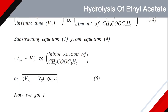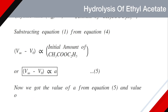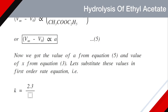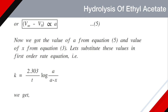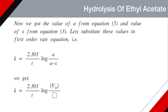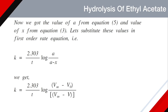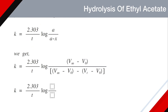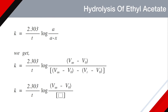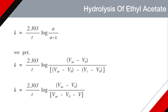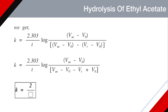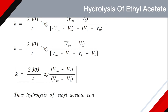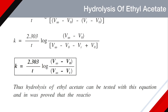We got the value of A from equation five and value of x from equation three. Substituting these values in the first order rate equation, k = 2.303/t × log(A/(A−x)), we get k = 2.303/t × log((V∞ − V0)/((V∞ − V0) − (Vt − V0))). Opening the bracket, k = 2.303/t × log((V∞ − V0)/(V∞ − Vt)), since V0 cancels. Thus, hydrolysis of ethyl acetate can be tested with this equation, and it was proved that the reaction is of first order.